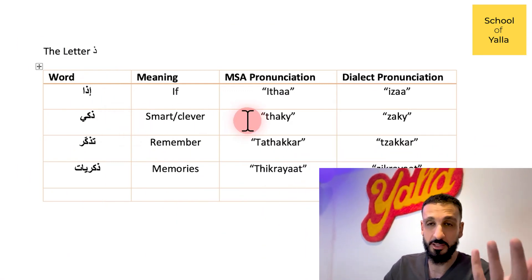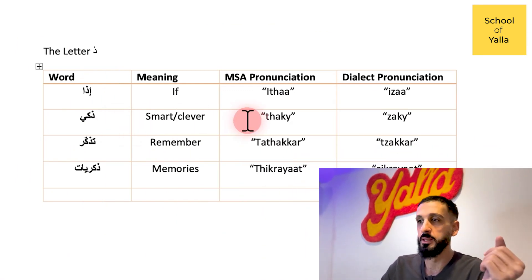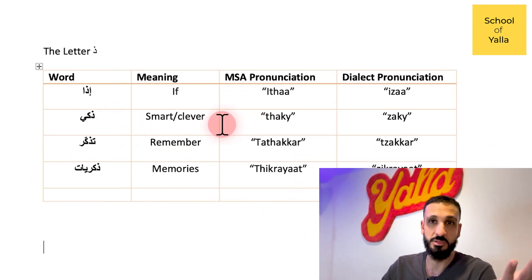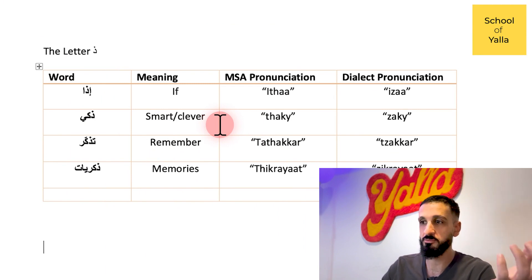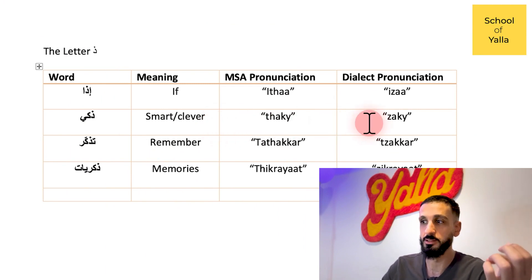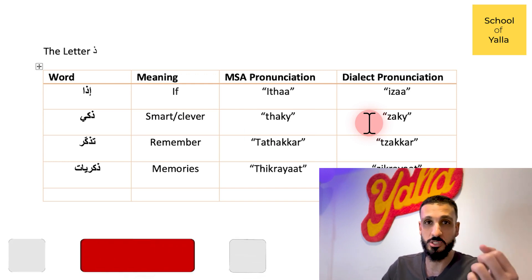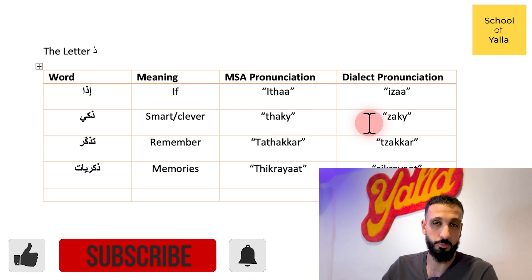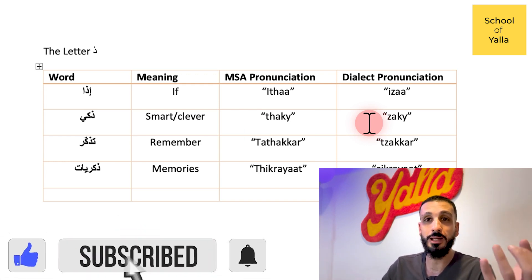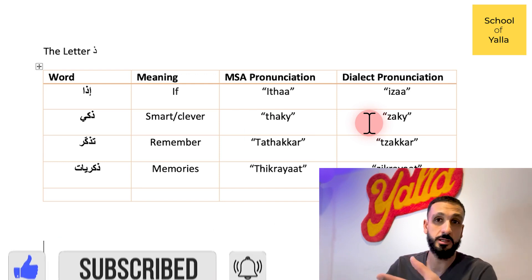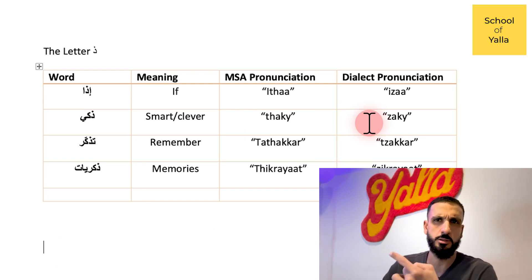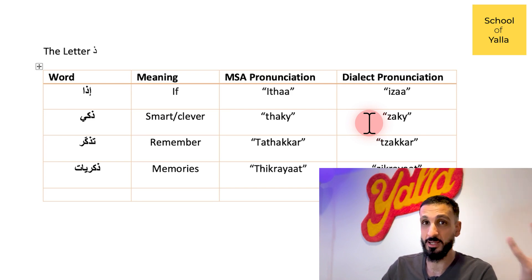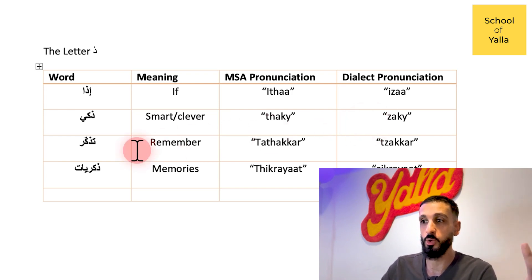"Thaki" — or "thakiy" — means "smart" or "clever". In ammiya (dialect), you could say "thaki" or "zaki". You could preserve the thal, but you're also going to hear a lot of people say "zaki". For example, "shab zaki" or "zakiye". Essentially, it's "thaki" originally, but in dialect it could be "zaki".